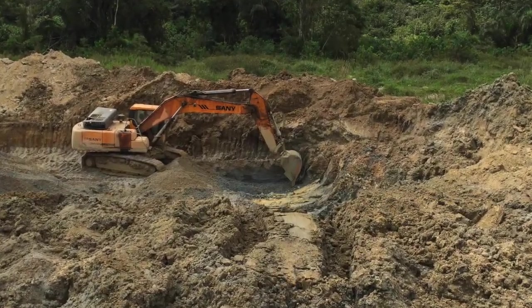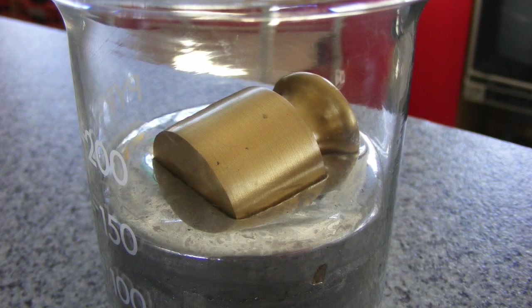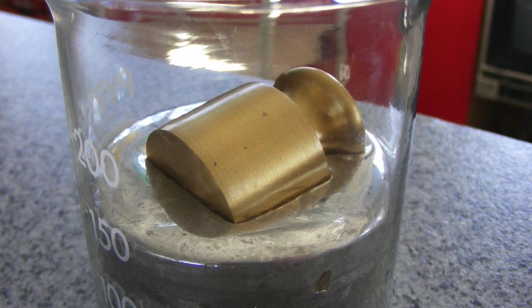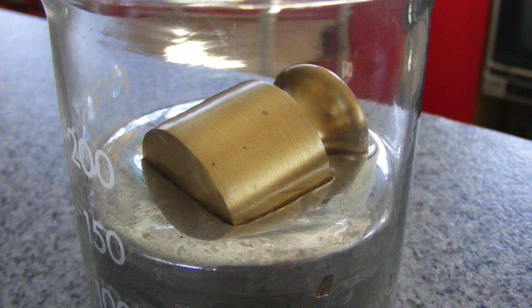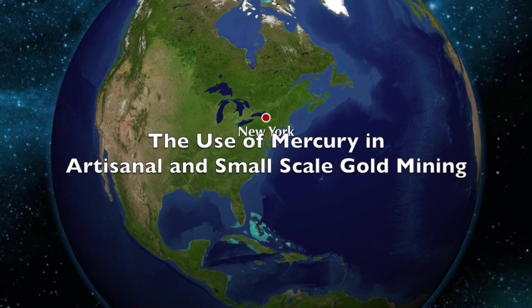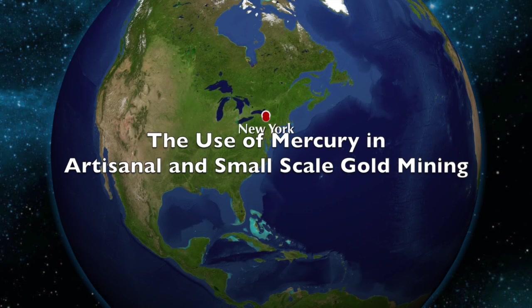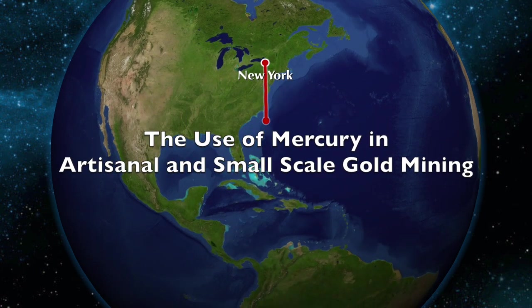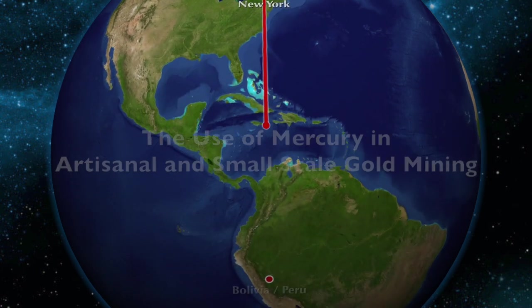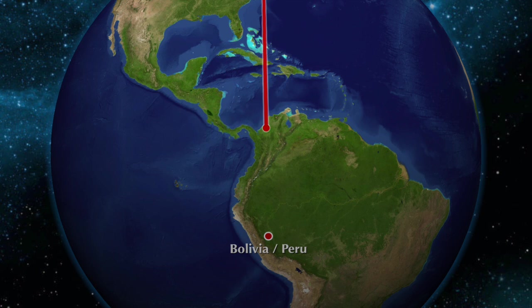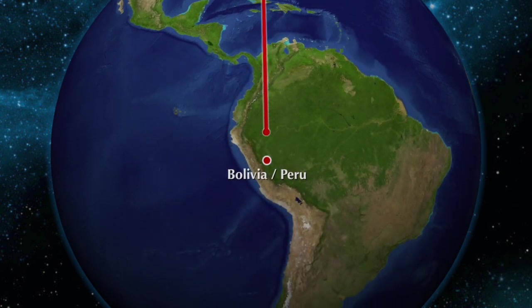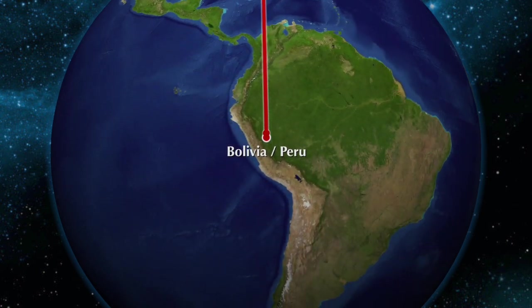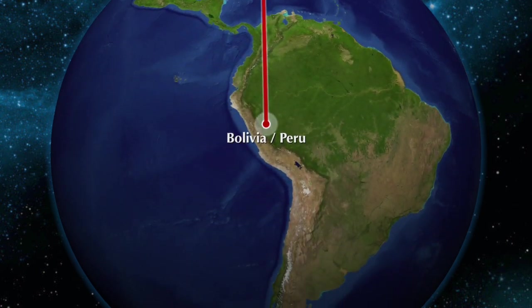Either way, artisanal and small-scale gold miners are using liquid mercury to extract the tiny granules of gold. In this presentation I'll review the mercury gold amalgamation process by describing the mining communities in Bolivia and Peru. However, the processes are similar throughout the world.